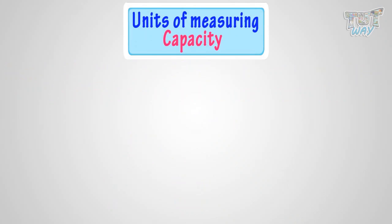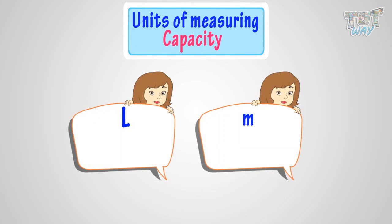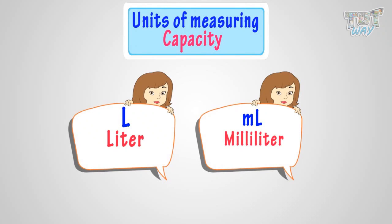Now, let's learn the units for measuring capacity. Capacity is measured in L or mL, where L is the symbol for liter and mL is the symbol for milliliter.